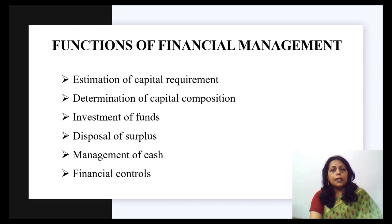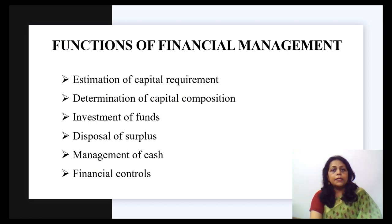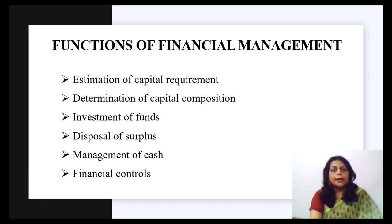This allocation can be done in two ways. First, dividend declaration, which includes identifying the rate of dividends and other benefits like bonus and retained profits. The volume has to be decided, which will depend upon expansion, innovation and diversification plans of the company, and thus the surplus can be distributed by the event manager.